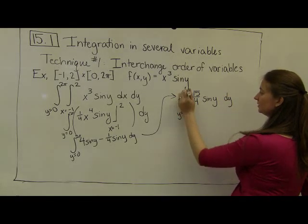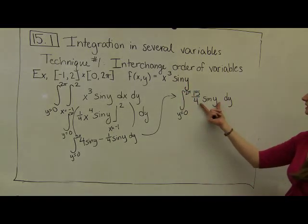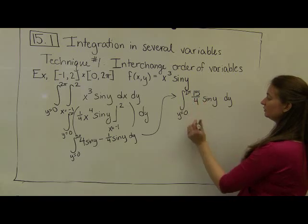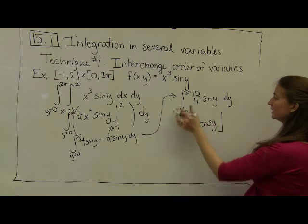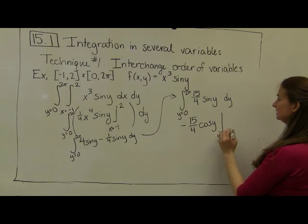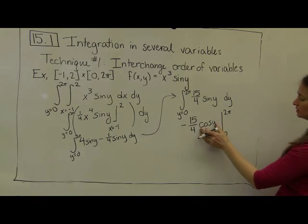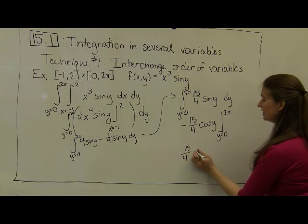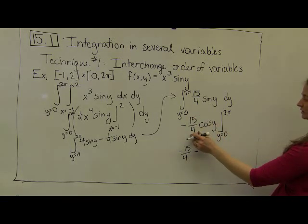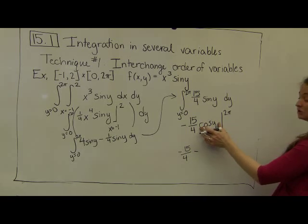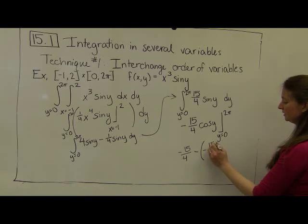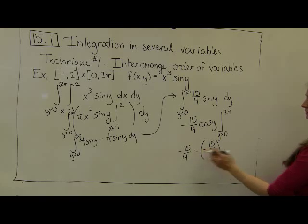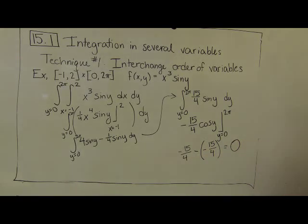Now I need to integrate the sine of y with respect to y. When I integrate sine of y, I get negative cosine. So fifteen-fourths times negative cosine of y, evaluated as y goes from zero to two pi. The cosine of two pi is one, so I get negative fifteen-fourths times one. Then I subtract negative fifteen-fourths times the cosine of zero, and the cosine of zero is also one. Subtracting a negative means this is a positive, and I end up with this whole big integral equaling zero.